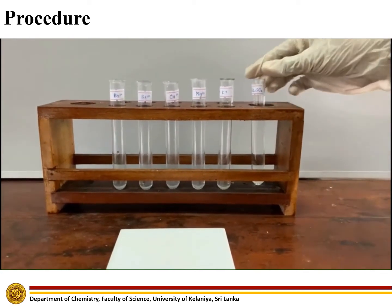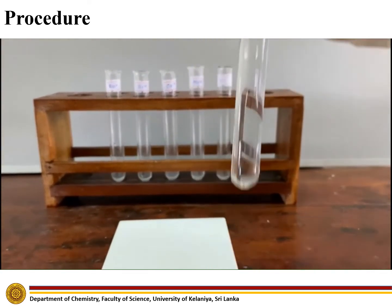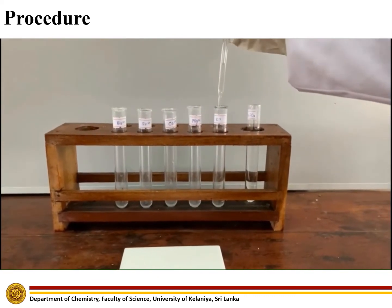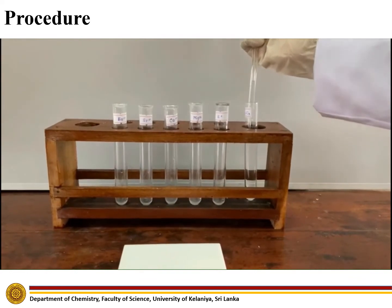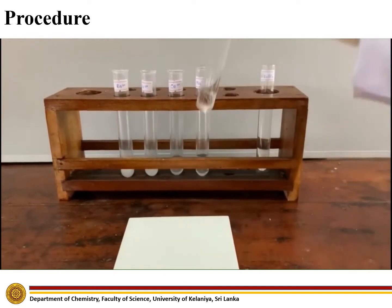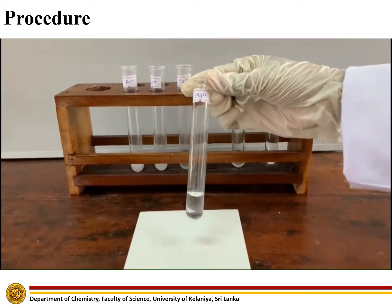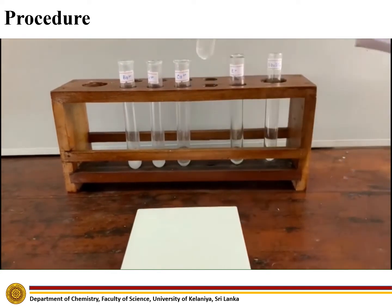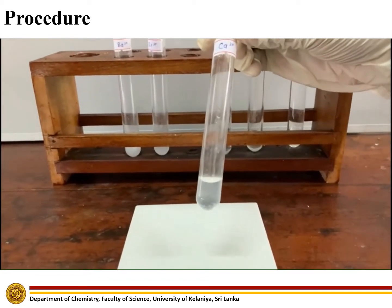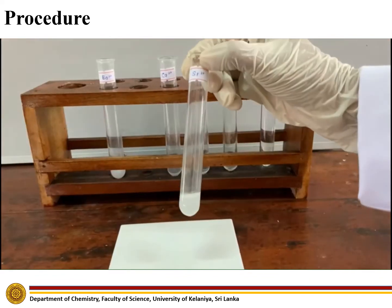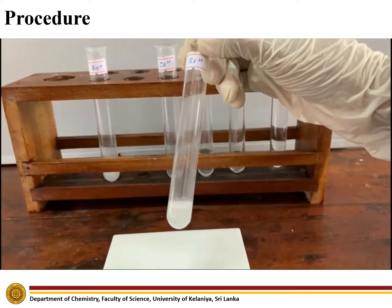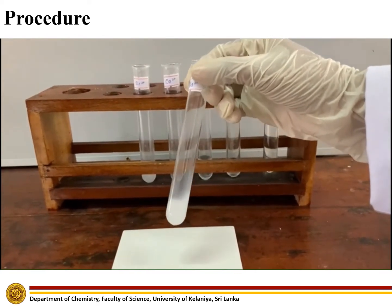Add sodium sulphate dropwise to the given cation solutions. It dissolves well in potassium ion solution and magnesium ion solution. It partially dissolves in calcium ion solution. A white precipitate forms in strontium ion solution and in barium ion solution.